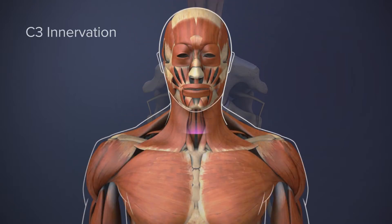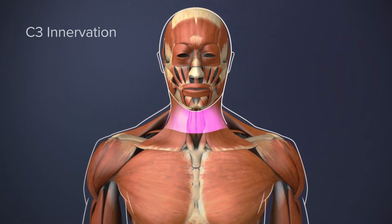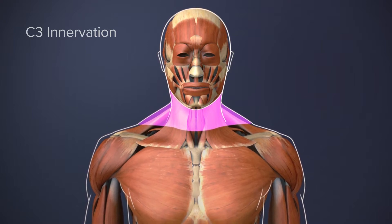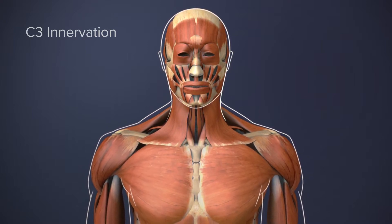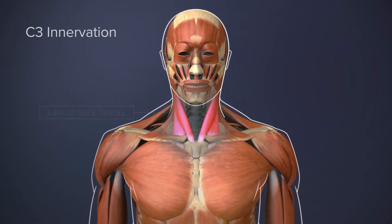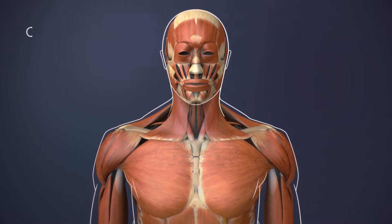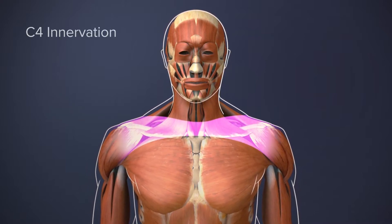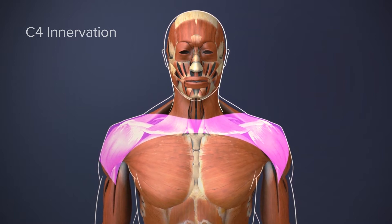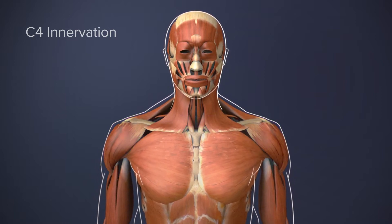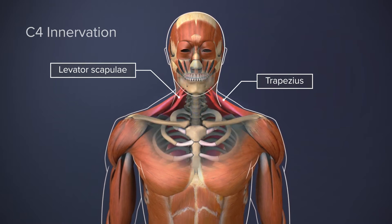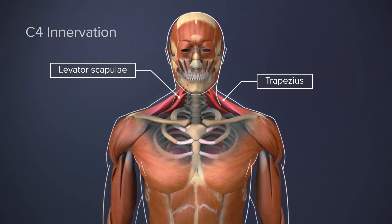The C3 spinal nerve typically innervates skin on parts of the neck and head. It also has a motor component that sends signals to various muscles, such as the lateral neck flexors. The C4 spinal nerve typically innervates skin on the shoulder and upper arm, and also sends signals to various muscles, such as the upper trapezius and levator scapulae.